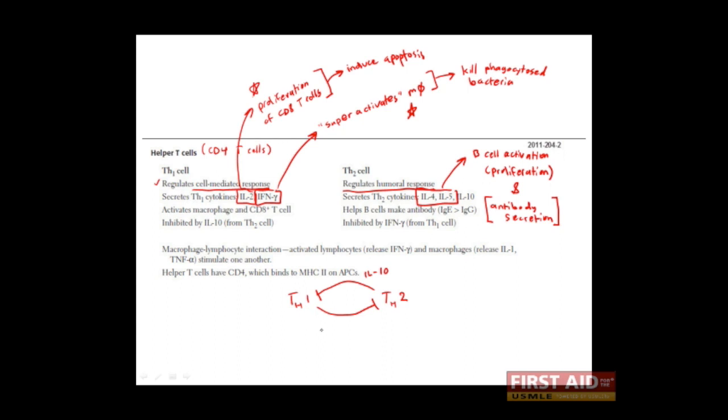Th1 cells, on the other hand, will produce interferon gamma, which you already know, which disfavors the production of Th2 cells. This is mainly to keep the immune response specific.